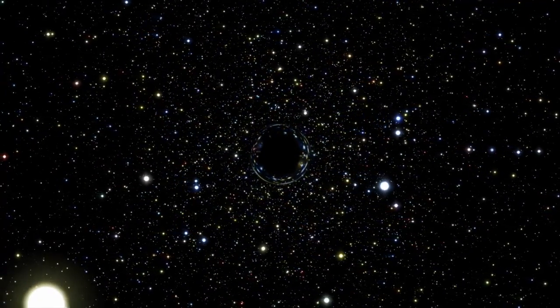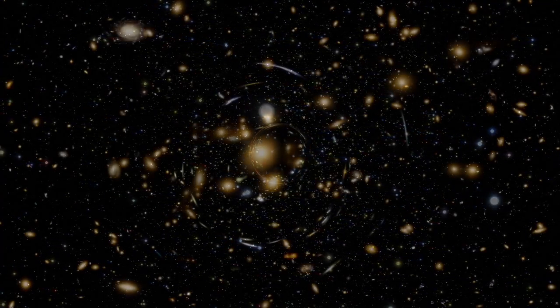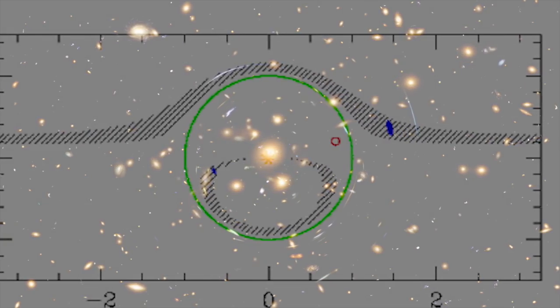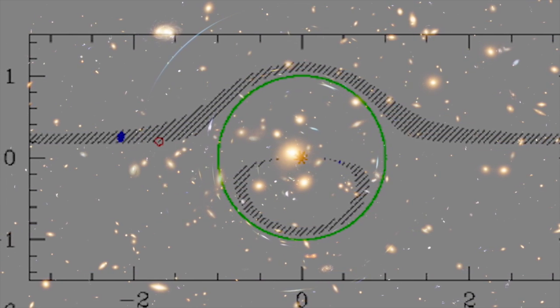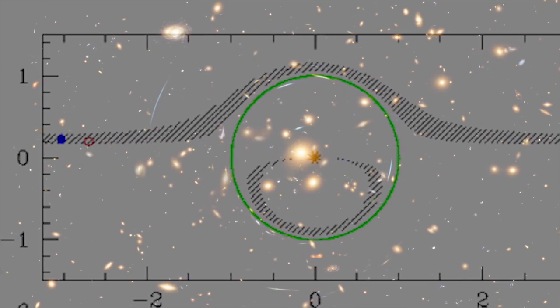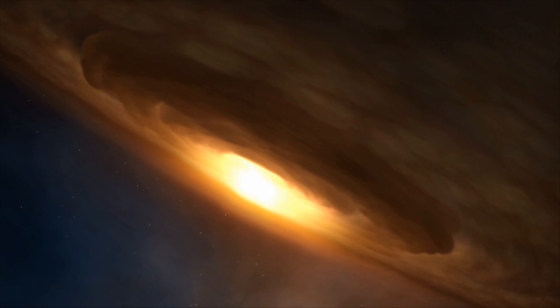Sometimes, if we're lucky, we can find a lone black hole as it passes in front of a star or galaxy in our line of sight. The light from the distant background body is bent around the boundary of the infinite gravitational pull of the black hole in an effect known as gravitational lensing.